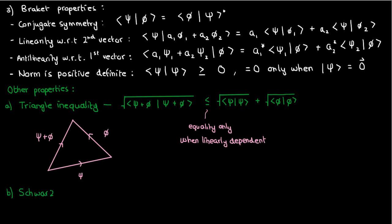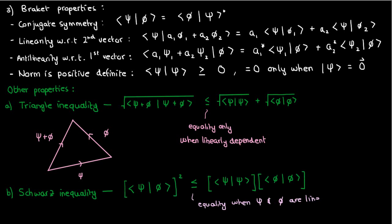There's also the Schwartz inequality, which says that the square of the inner product of two vectors psi and phi is less than or equal to the product of the norms of the individual vectors. Again, equality only applies if the vectors are linearly dependent.